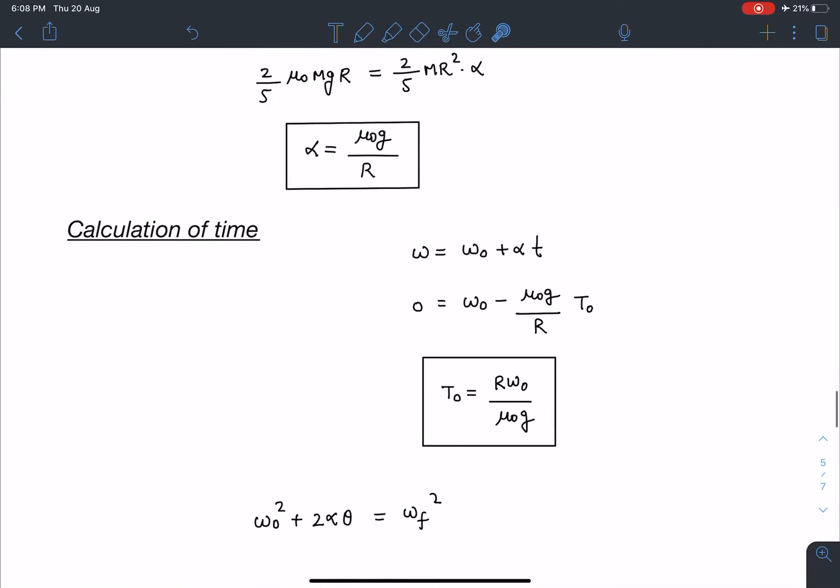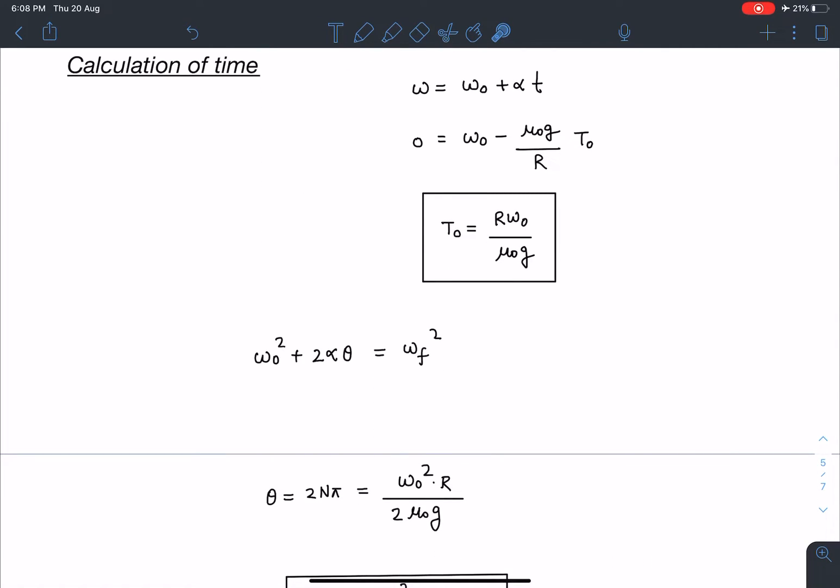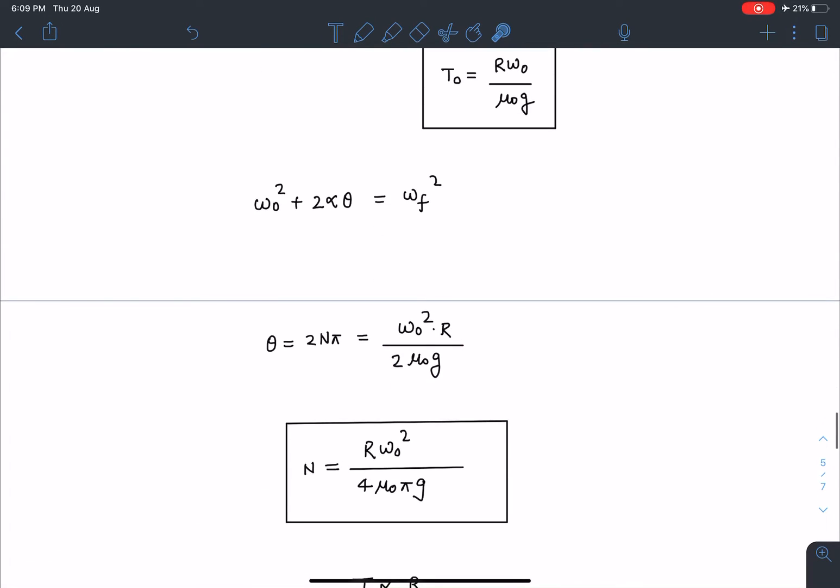Similarly I can use omega final squared minus omega initial squared equals 2 alpha theta. If we use this, we get the number of turns. Theta I can write as 2n pi if n turns it is rotating. The total angular displacement is going to be 2n pi. So 2n pi equals omega initial squared divided by 2 alpha. When I substitute these values, I'm going to get n as R omega naught squared by 4 mu naught pi g. This is the answer for the first part, this answer for second part.